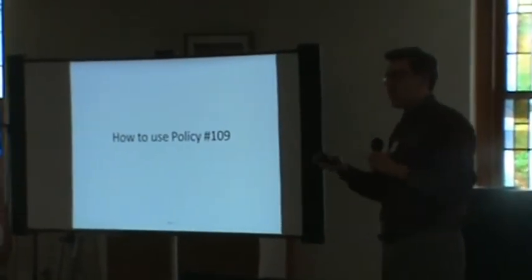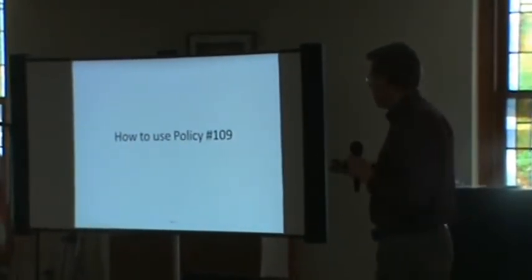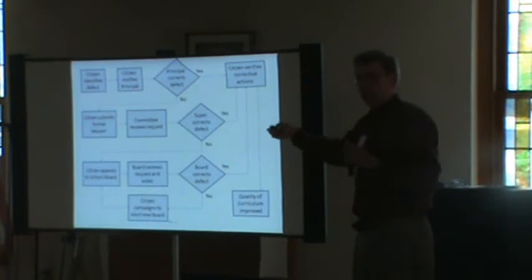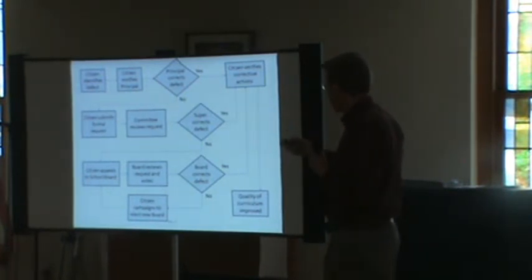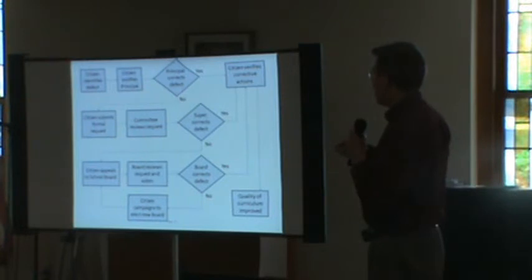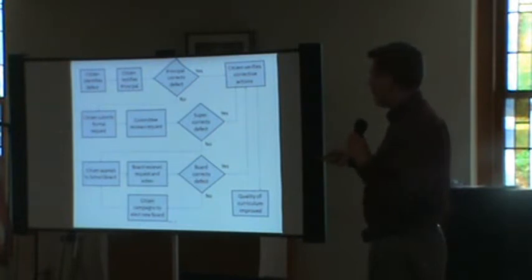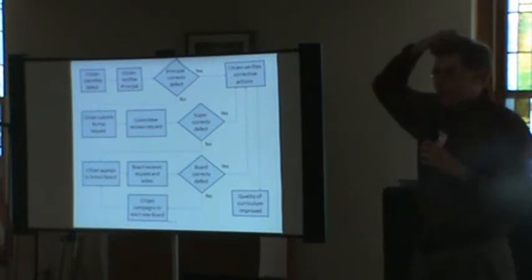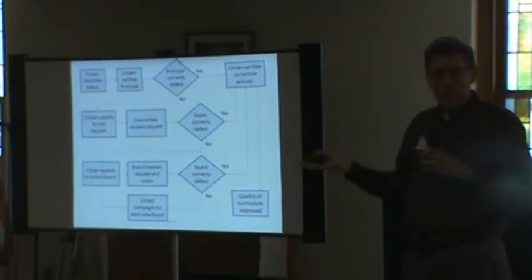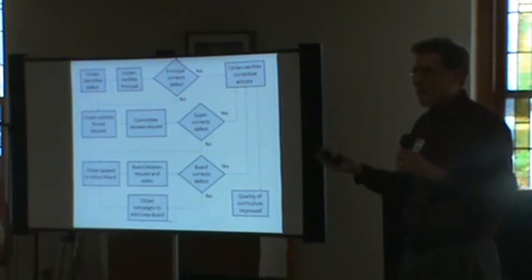If you come across something objectionable or substandard, how would you go about addressing it? This is how to use Policy 109. It starts where you identify the defect and then notify the principal. At that point, the principal can either say, 'You're right, this book is horrible, I'll remove it,' or say, 'We think this book is great,' and ask you to submit a formal request. That's what happened to me two years ago. They said, 'Mr. Adams, we have a form called the Citizen's Request for Reconsideration of a Work. We've never used this form before in the history of the school, but if you wouldn't mind, please fill it out and send it in.'